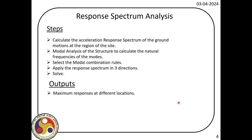Today we will use these modal combination rules to find out the response of the structure. Once we have the modal analysis, we apply the modal combination rule in the third step and then find out the response in three orthogonal directions. The output from this analysis is the maximum response at different locations. We identify the nodes at which we want to find the response and then at that particular location we find out the maximum response using response spectrum concept.